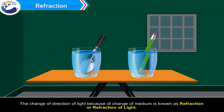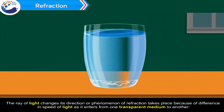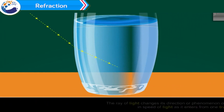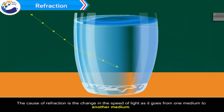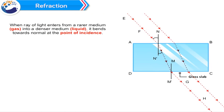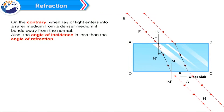The change of direction of light because of a change of medium is known as refraction, or refraction of light. The ray of light changes its direction because of the difference in the speed of light as it enters from one transparent medium to another. When a ray of light enters from a rarer medium (gas) into a denser medium (liquid), it bends towards the normal at the point of incidence, and the angle of incidence is greater than the angle of refraction.